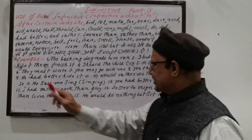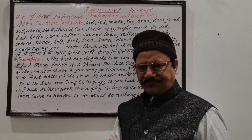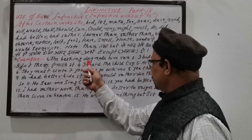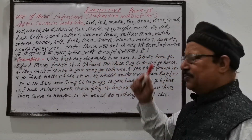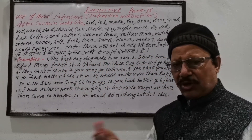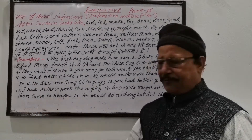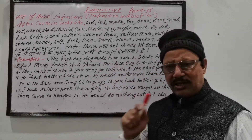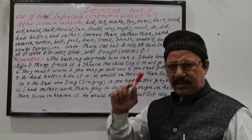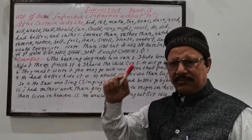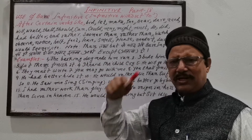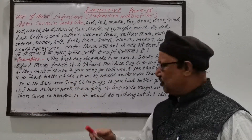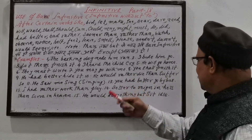Now, here are some examples that will make things clearer. 'The barking dog made him run.' — The barking dog made him run away. Note: it will never be 'made him to run'. He made him run, he made him sing, he made him laugh, he made him dance — these sentences are formed this way.